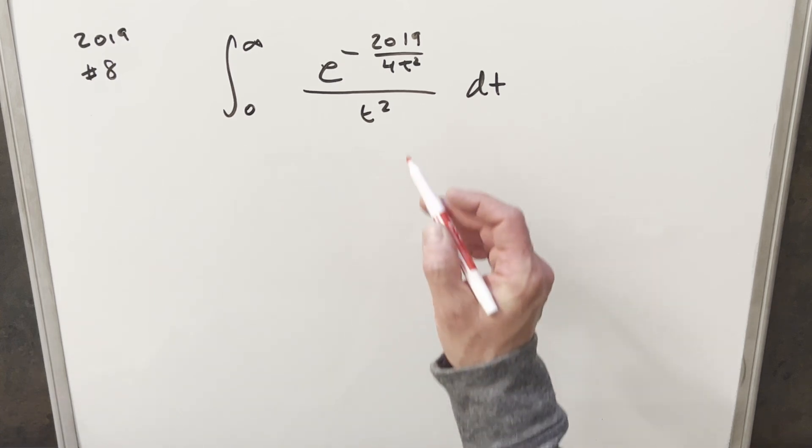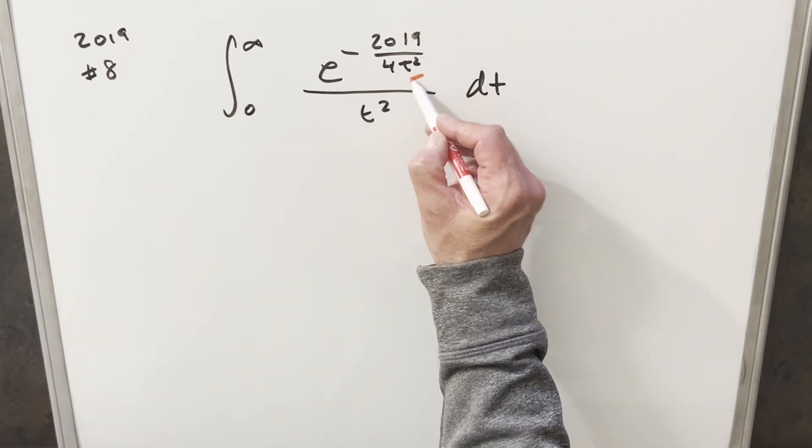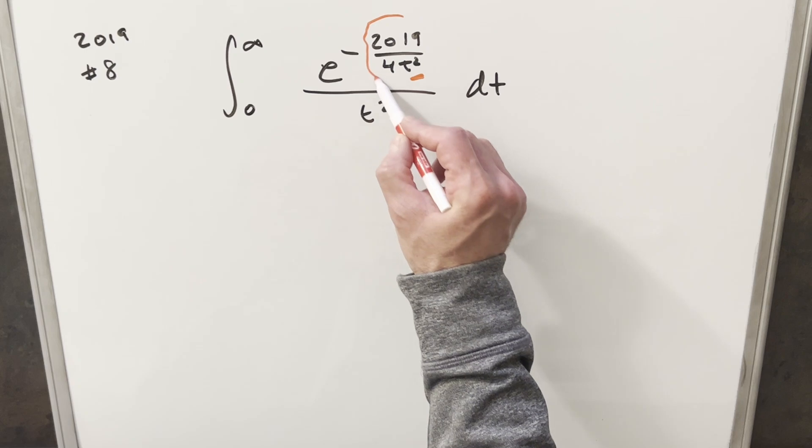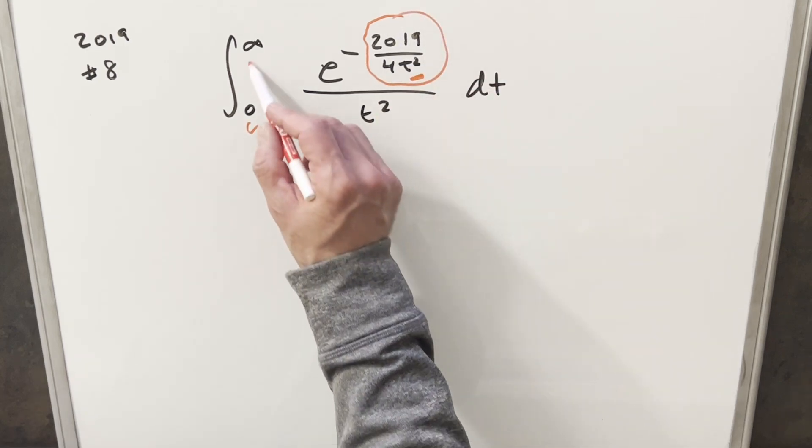Okay, to get started with this, the first thing I want to notice here is just this similarity with something squared here. This looks very similar to the Gaussian integral, especially with these bounds right here.